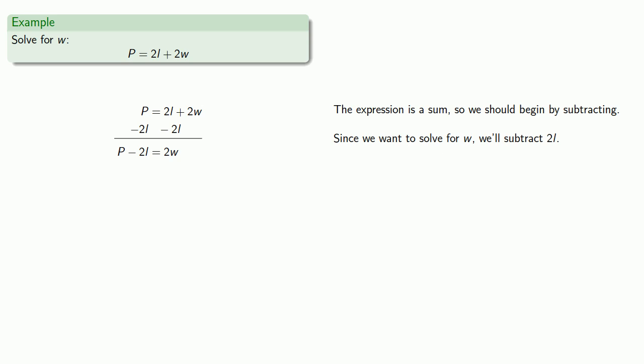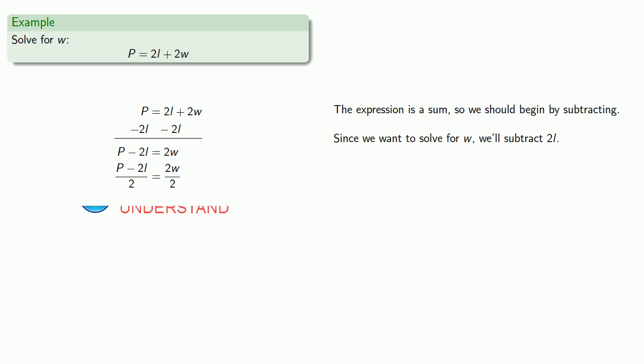We're trying to solve for W. We had an addition — we've taken care of that. We also have a multiplication, so now we want to divide by 2. And now we have our equation in the form W equals stuff that doesn't include W. We've solved for W.